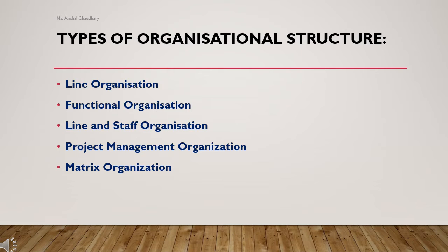Next is line and staff organization. It is a combination of the above two types. In this, line officers are the executives and staff officers are the advisors. Duties and responsibilities are clearly defined and related to each other. Next is project management organization, which focuses on the successful completion of projects by assigning project managers to each project. It is used when an organization has a few projects but with longer duration — a pure project organization is proposed.